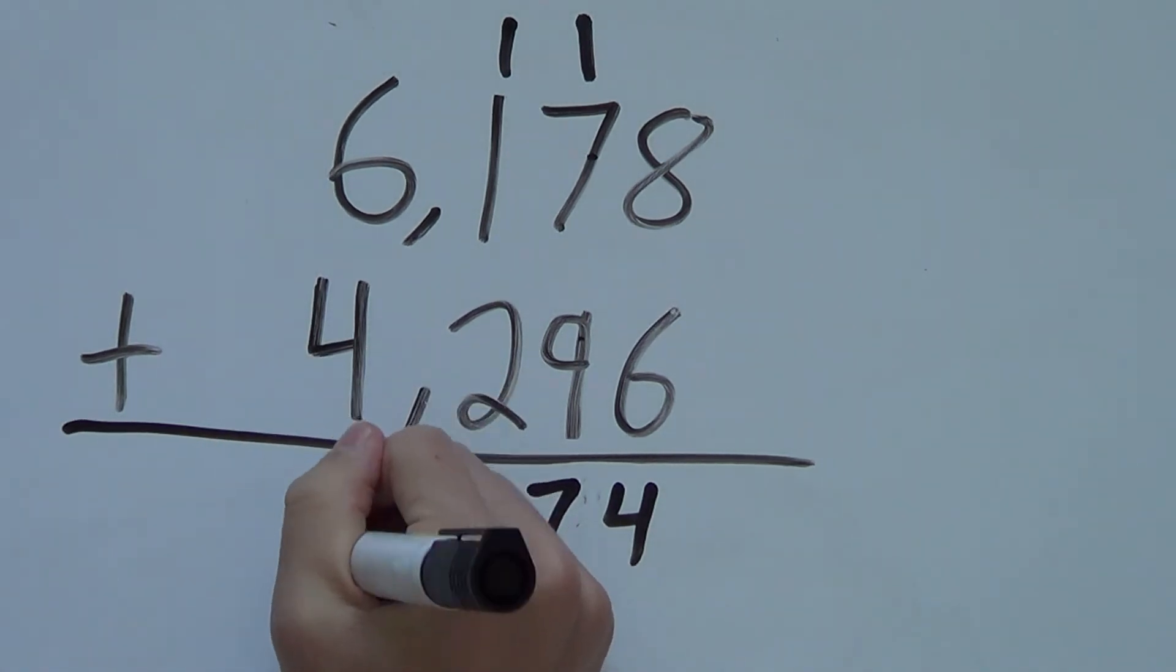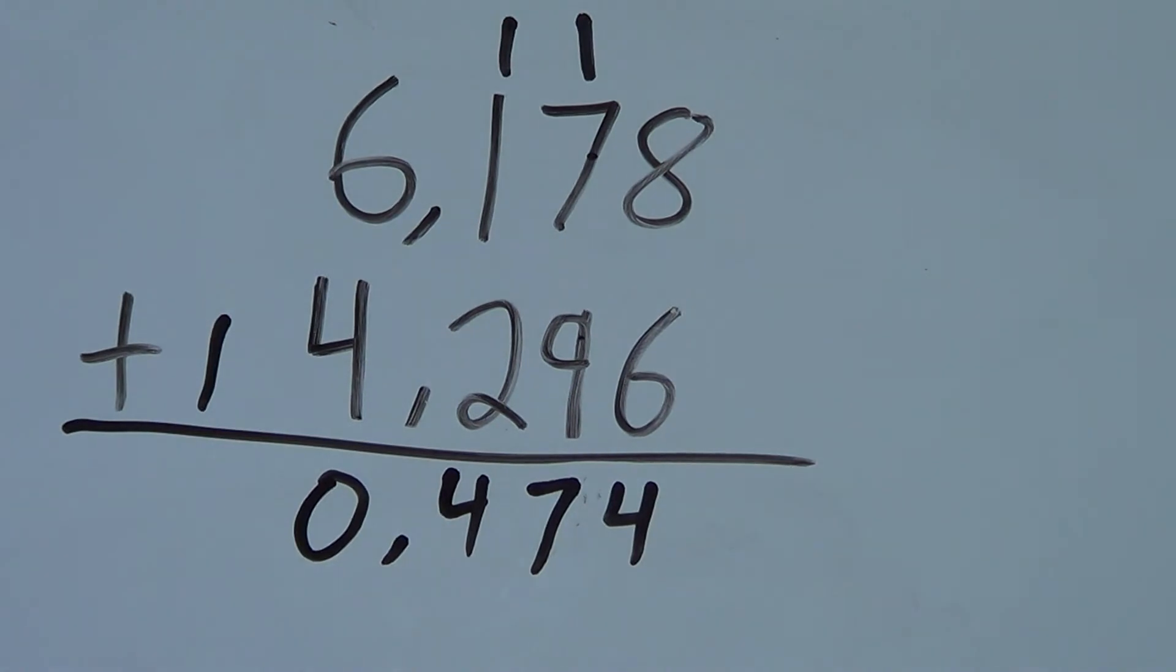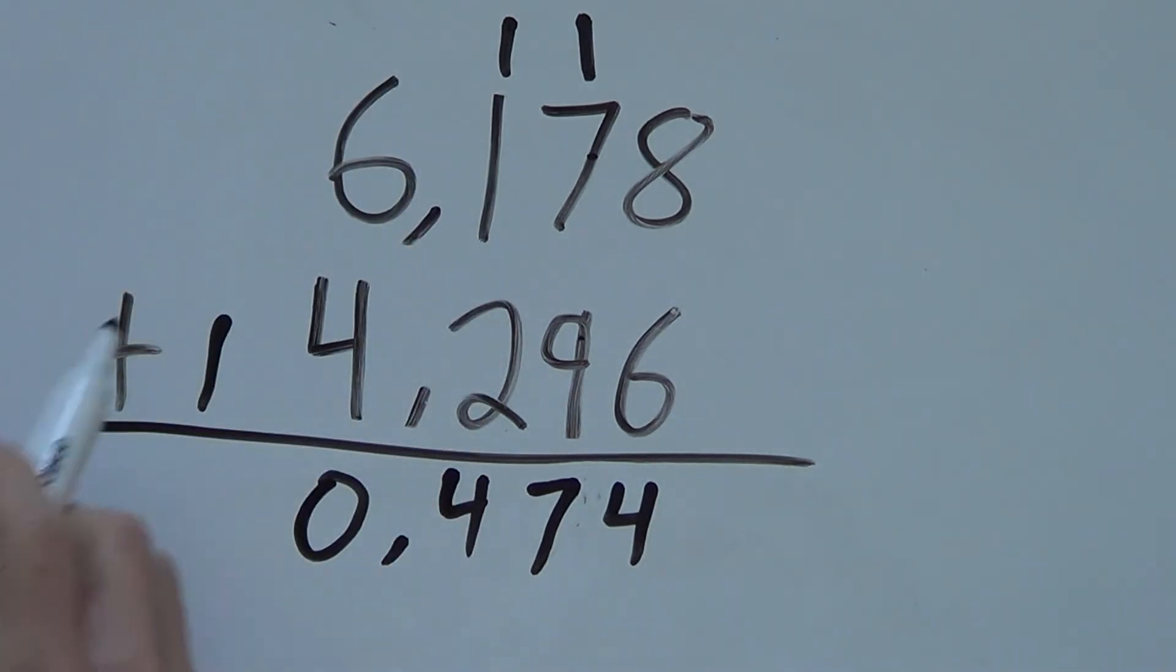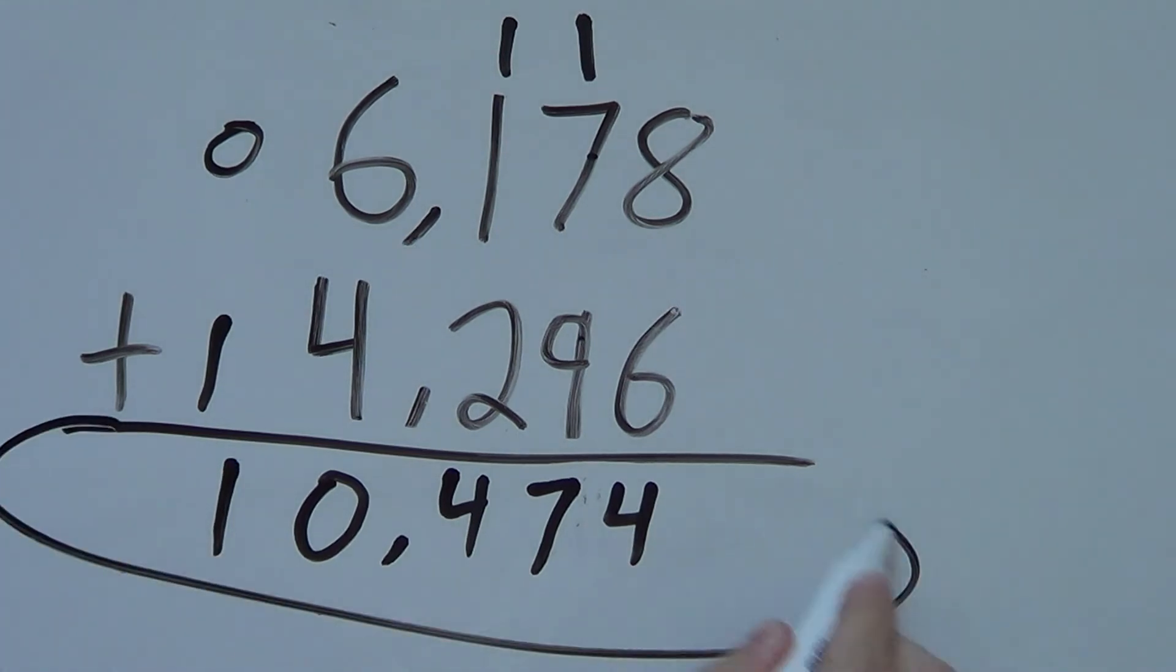So again, 0, 1. We carry the 1. This time 1 is all by itself. There's nothing above it. So it's like there's a 0. So 1 plus nothing is 1. So the 1 comes down. And that's our solution. 10,474. That was a harder one. So I hope you understood it. We'll look at one more of these larger ones.